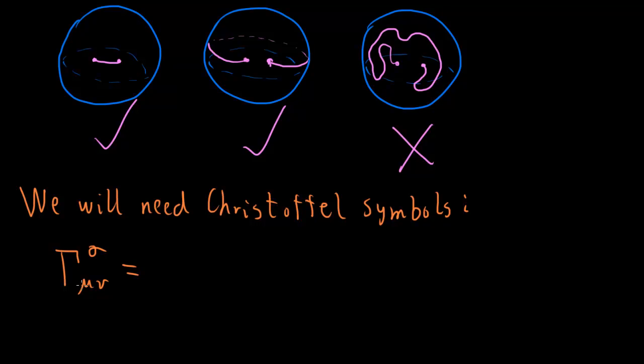So I need to tell you, for example, sigma is 1, mu is 1, nu is 1, that gives me a number, and if sigma is 2 and mu is 1 and nu is 1, that gives me another number, so this is a collection of many numbers, and it's defined by this fairly ridiculous-looking formula. So we have a derivative with respect to the metric, and then another derivative with respect to the metric over here, and then minus a third derivative with different indices.